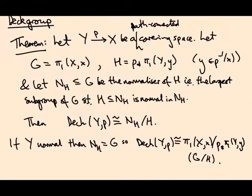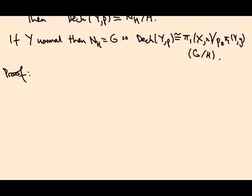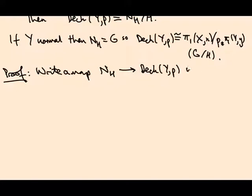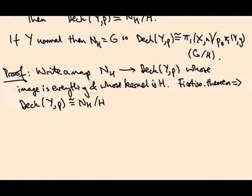Okay, let's prove this. The strategy is to write down a map from Nₕ to the deck group that is surjective and whose kernel is H. Then the first isomorphism theorem will tell us that the quotient is isomorphic to the image, which is the whole deck group. That's the idea.